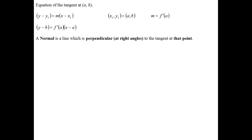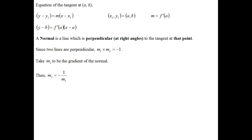A normal is a line which is perpendicular, meaning at right angles, to the tangent at that point. To work out the equation of a normal we need to use the condition that since the lines are perpendicular, the product of their gradients equals minus 1. We use this property to work out the gradient of the normal. Taking the gradient of the normal to be m2, if we rearrange, m2 equals minus 1 over m1. We already know m1, the tangent gradient, which is f prime of a. So m2 equals minus 1 over f prime of a.